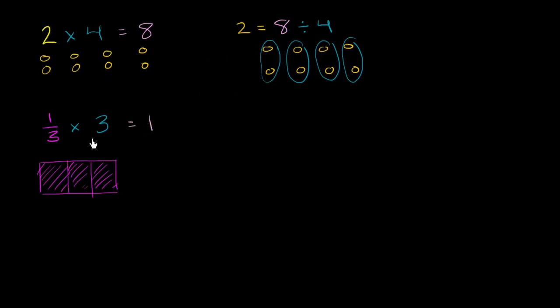So you use the exact same idea. If 1 third times 3 is equal to 1, then that means that 1 divided by 3 must be equal to 1 third.